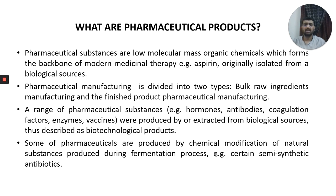We know a range of pharmaceutical substances which includes mostly biological substances such as hormones, antibodies, coagulation factors, and enzymes, which are produced from or isolated from different biological sources — and they were initially classified as biotechnological products. Later on, we also started doing chemical modification of a few naturally occurring substances produced during fermentation, and many semi-synthetic antibiotics are presently used by human beings.